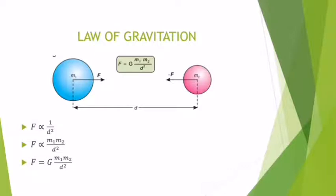So, our formula will become F is equal to G M1 and M2 over D square. Where G is the constant and is known as gravitational constant.